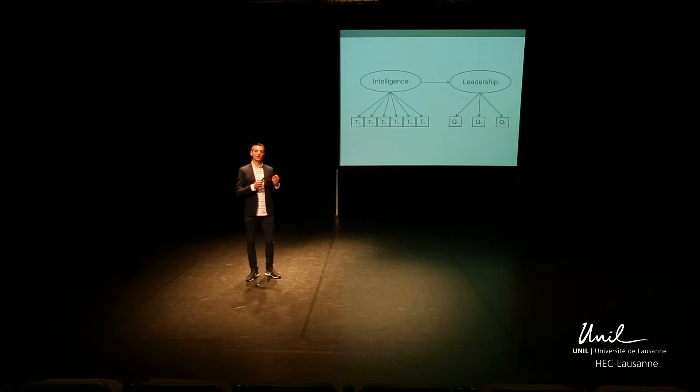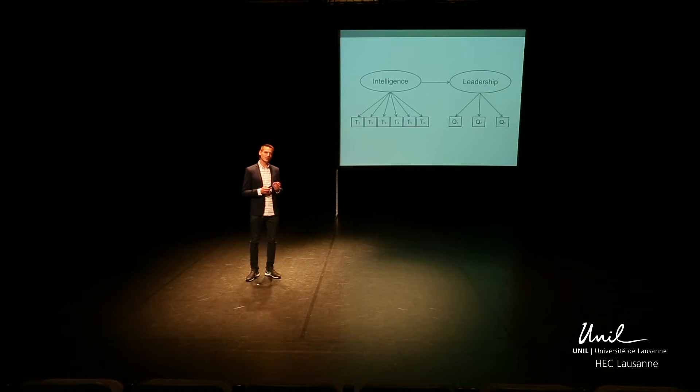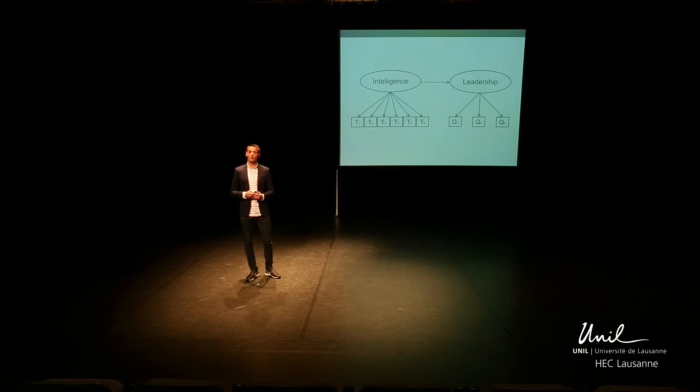A common method in the social sciences is called structural equation modeling. This method is very powerful because it can handle latent variables — variables that are not directly observable. Instead, one needs to use indicators of the latent variable. For example, a researcher studying how intelligence relates to leadership behavior would generally measure this construct via some tests or questionnaires that are directly observable.